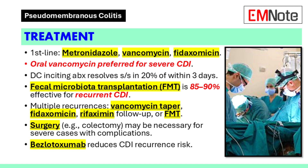Fecal microbiota transplantation is also an option for multiple recurrences. In severe cases of pseudomembranous colitis with complications like megacolon or perforation, surgery such as colectomy may be necessary. Bezlotoxumab is an antitoxin antibody that can reduce the risk of Clostridium difficile infection recurrence.